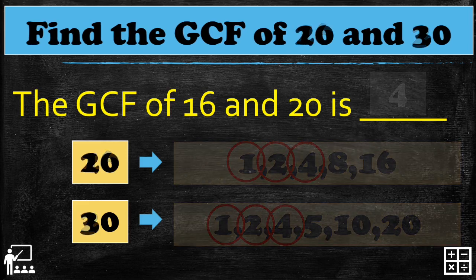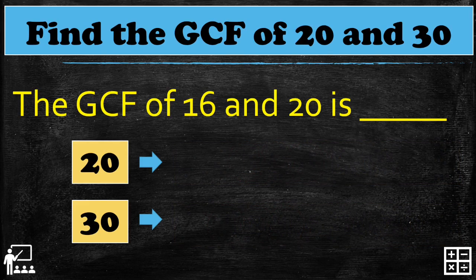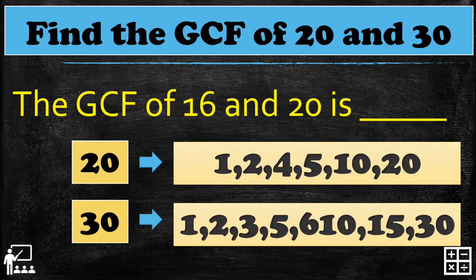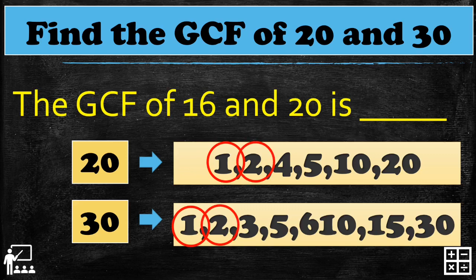Now let's find the GCF of 20 and 30. I list down all the possible factors of 20 and 30. Let's find out what the common factors are — I'll give you 3 seconds. The common factors are 1, 2, 5, and 10. The largest number in this set is 10, so the GCF of 20 and 30 is 10.